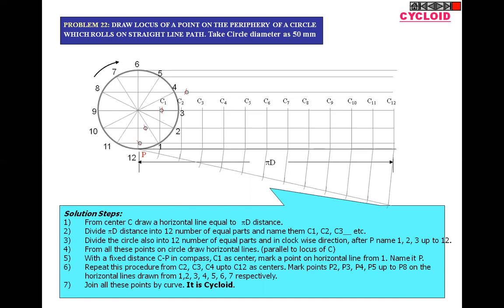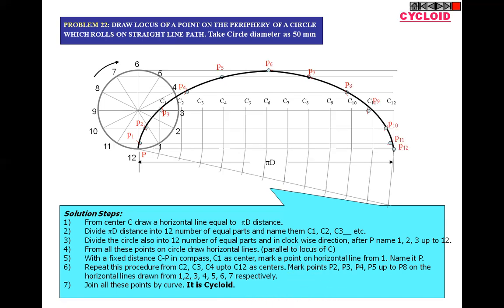The center changes from C1 to C12 while the radius remains the same. Take C1 as center and mark the first point on the first horizontal line. Take C2 as center and mark on the second line; C3 as center, mark on the third line. We get the third point. Similarly for the fourth and fifth points. The sixth point lies at the straight center point. For the remaining half, continue similarly and join all the points to get the cycloid.